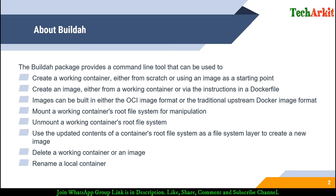Images can be built in either the OCI (Open Container Initiative) image format or the traditional upstream Docker image format. If you want to create an upstream Docker image format container, we can also do that from Buildah. You can mount a working container's root filesystem, modify that container, import it, and save it. You can also use updated contents of a container's root filesystem as a file system layer to create a new image, delete a working container or image, or rename a local container.